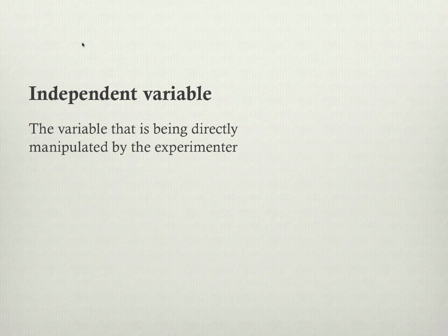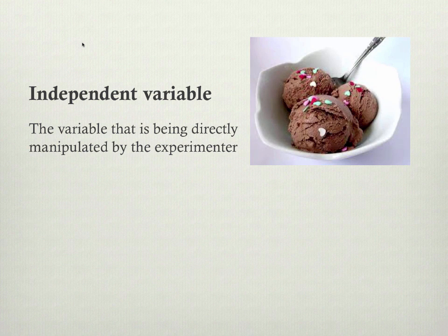We were holding everything constant — no variables are changing — and then we pick one thing and change it to see if it causes a difference in the other variables. So in our very ridiculous example, the independent variable would be ice cream, because we're holding everything else constant and then changing whether we're giving people ice cream or not to see if that causes any kind of an effect.